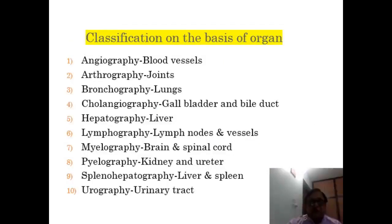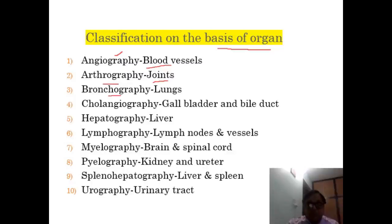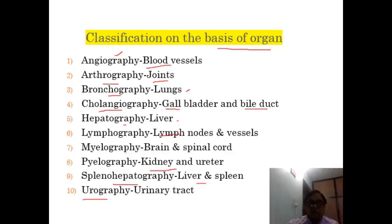Diagnostic agents can also be classified on the basis of organ. If they are used for blood vessels, the process is called angiography. For joints, this is called arthrography. Bronchography is used for the lungs. Cholangiography is used for the gallbladder and the bile duct. Hepatography for the liver. Lymphography is used for lymph nodes and vessels. Myelography for the brain and spinal cord. Pyelography for kidney and ureter. Splenohepatography for the liver and spleen. Urography for the urinary tract.